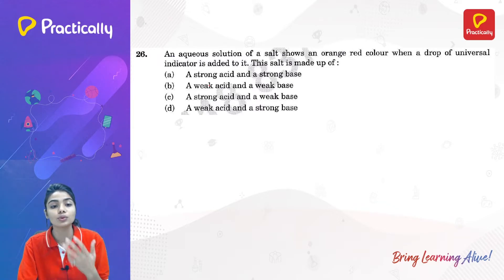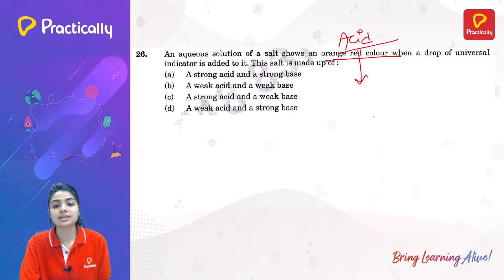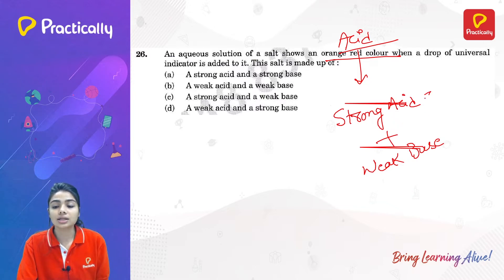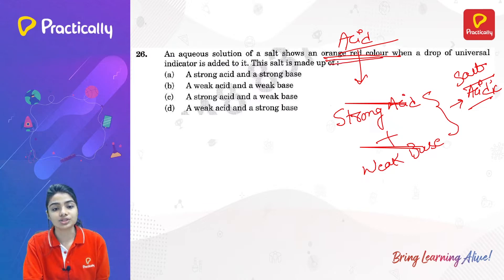An aqueous solution of a salt shows an orange-red color when a drop of universal indicator is added. Orange-red indicates an acidic solution, meaning the salt is formed by a strong acid and a weak base. A salt from a strong acid and weak base is acidic in nature, which causes the pH indicator to show orange-red. So option C — strong acid and weak base — is the correct answer.